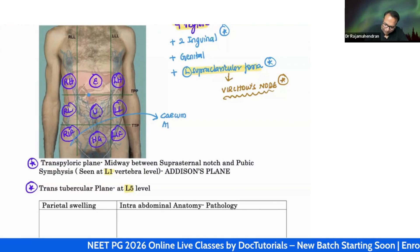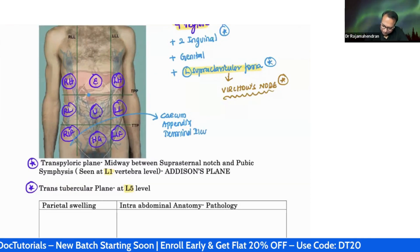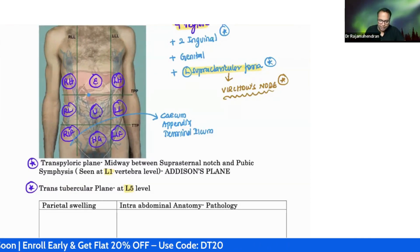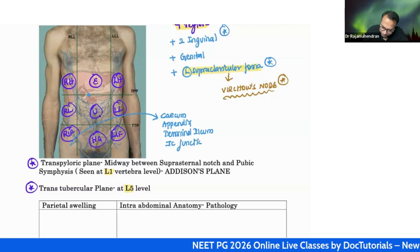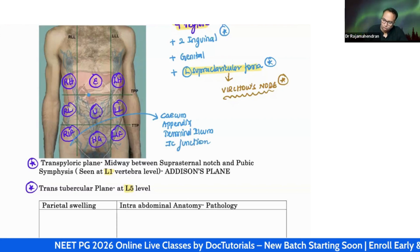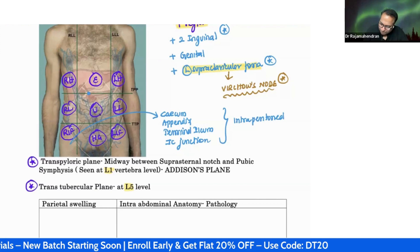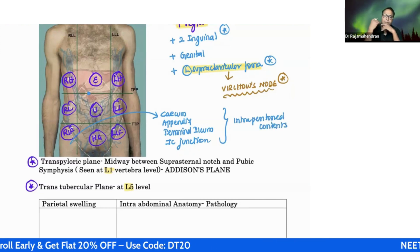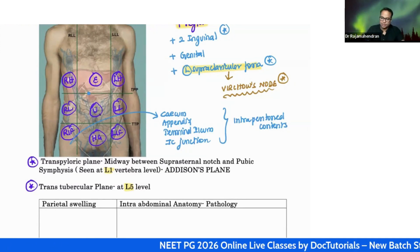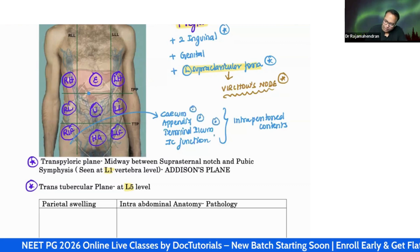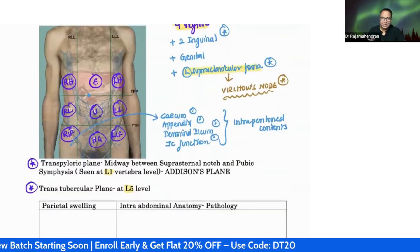The normal intraperitoneal structures in the right iliac fossa are: cecum, appendix, terminal ileum, and the ileocecal junction. These are all intraperitoneal contents inside the peritoneum. Extraperitoneal contents include the ureter and blood vessels. Problems from any of these intraperitoneal structures can present as a right iliac fossa mass.